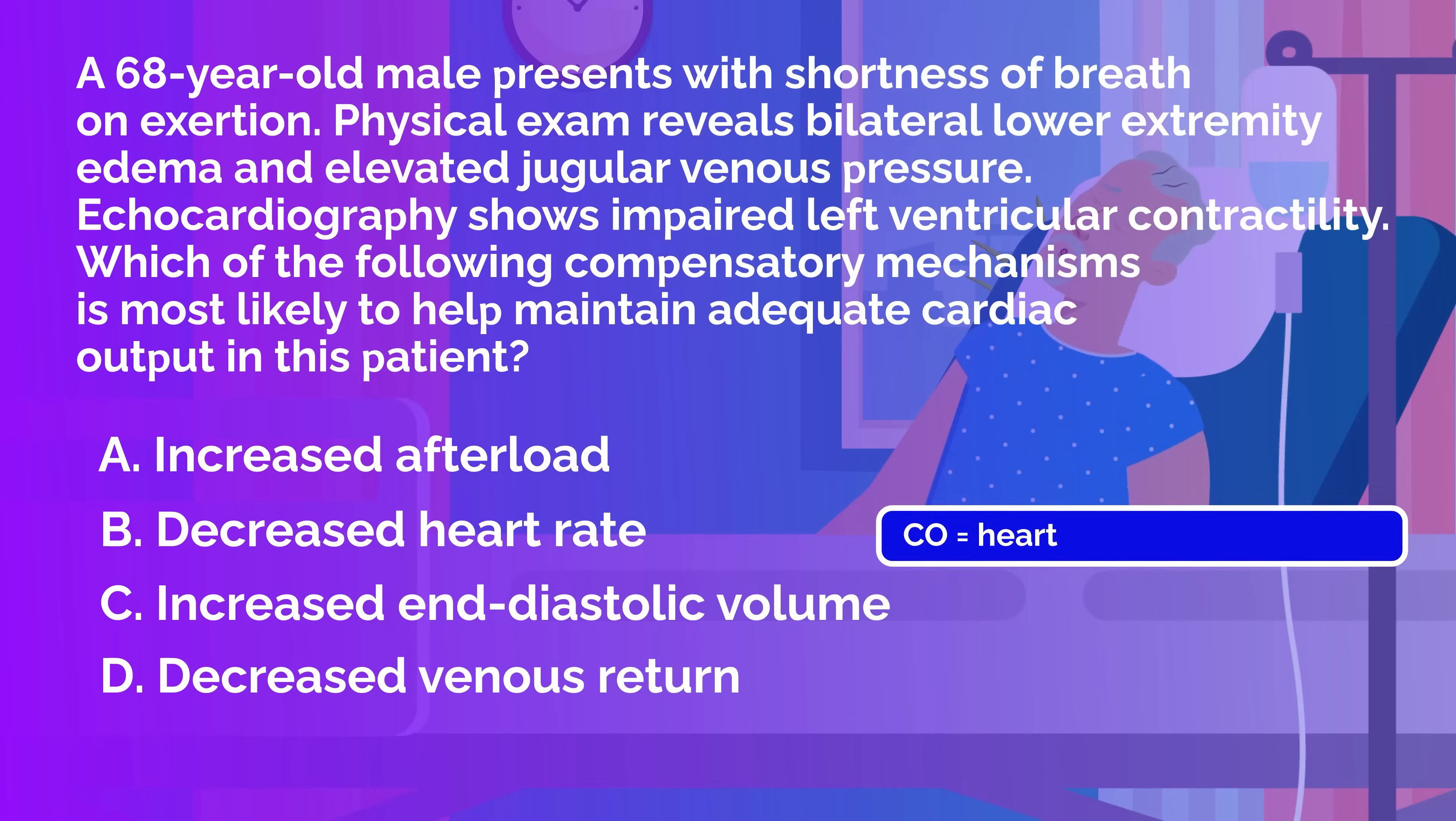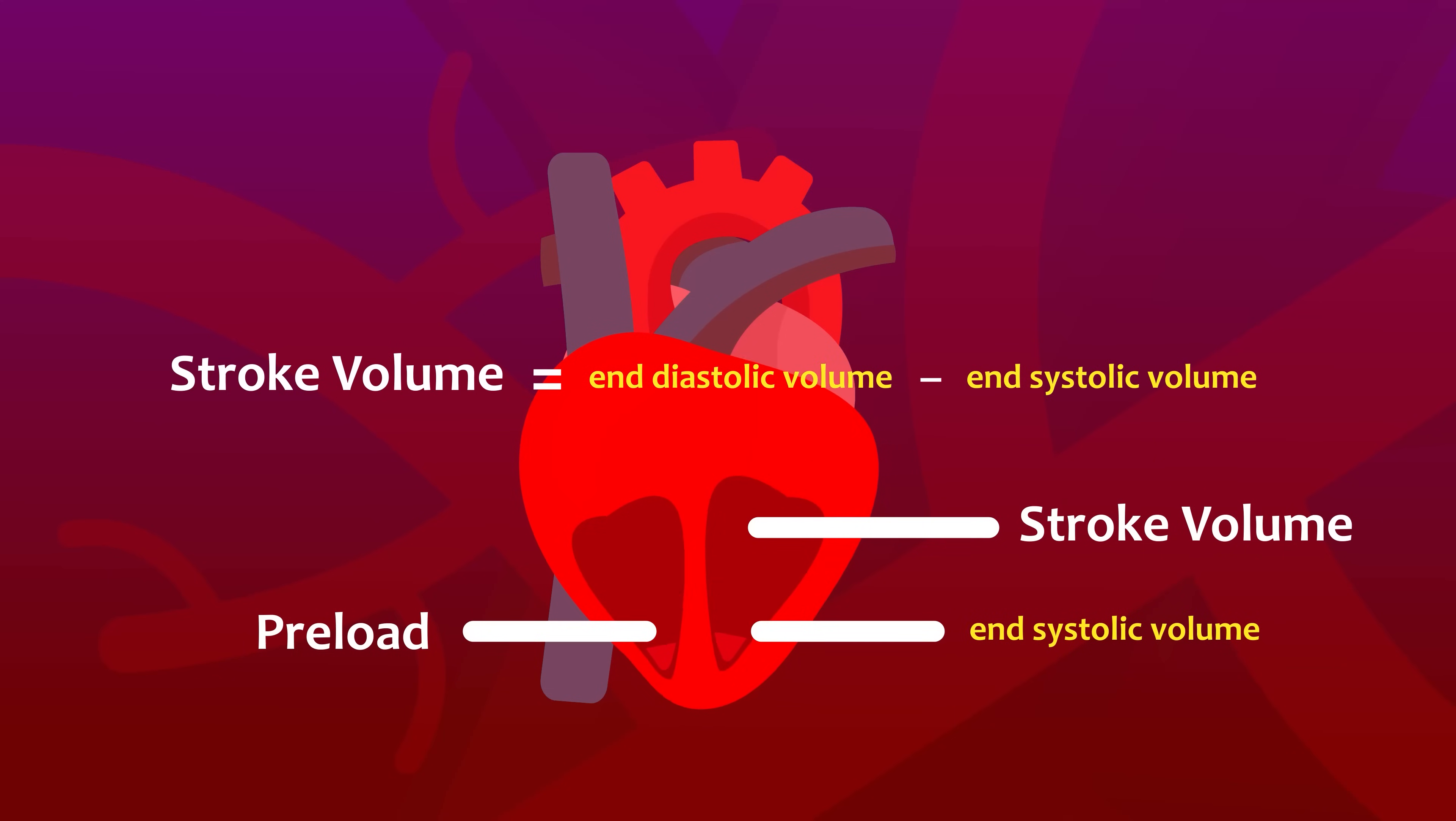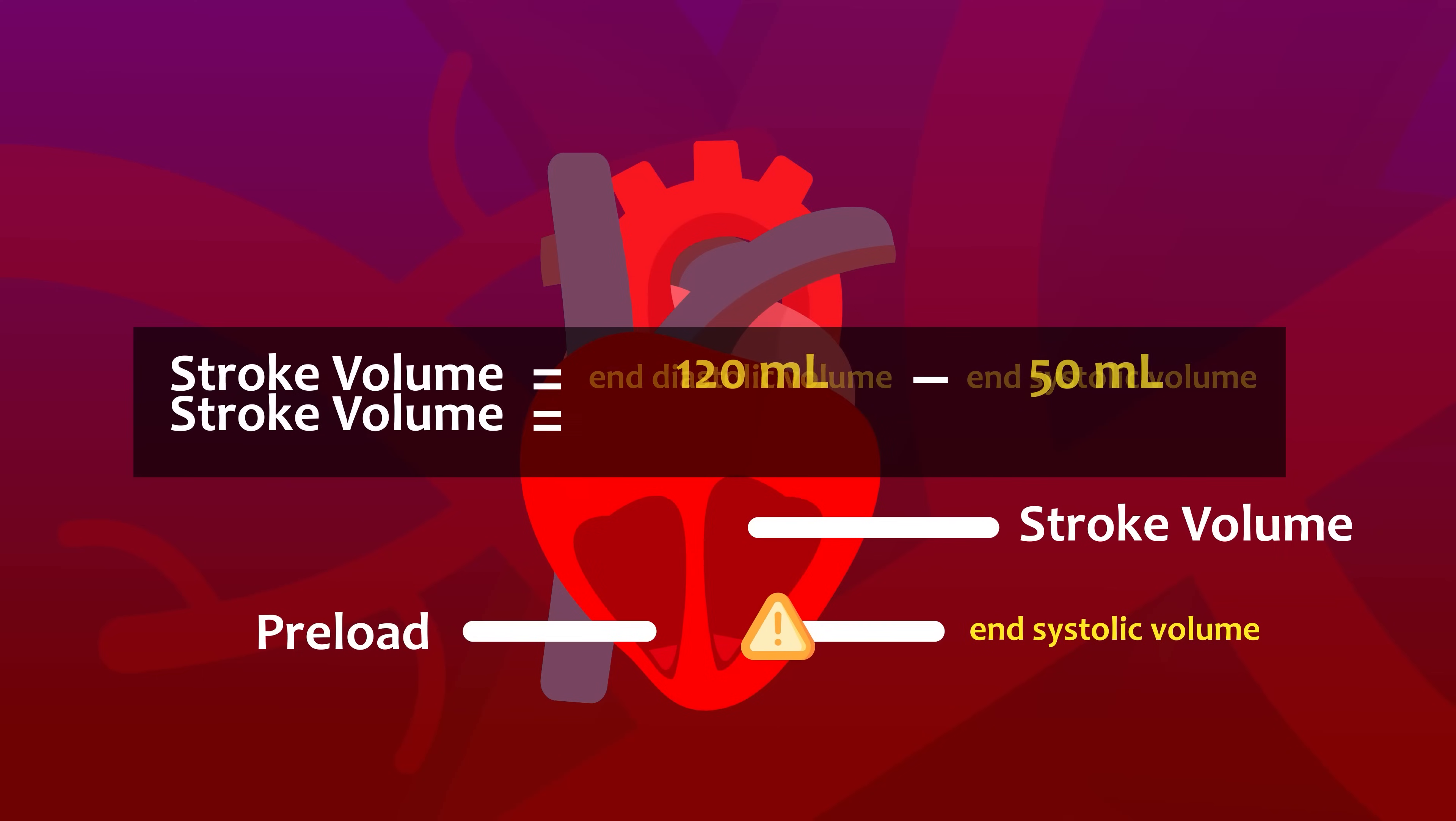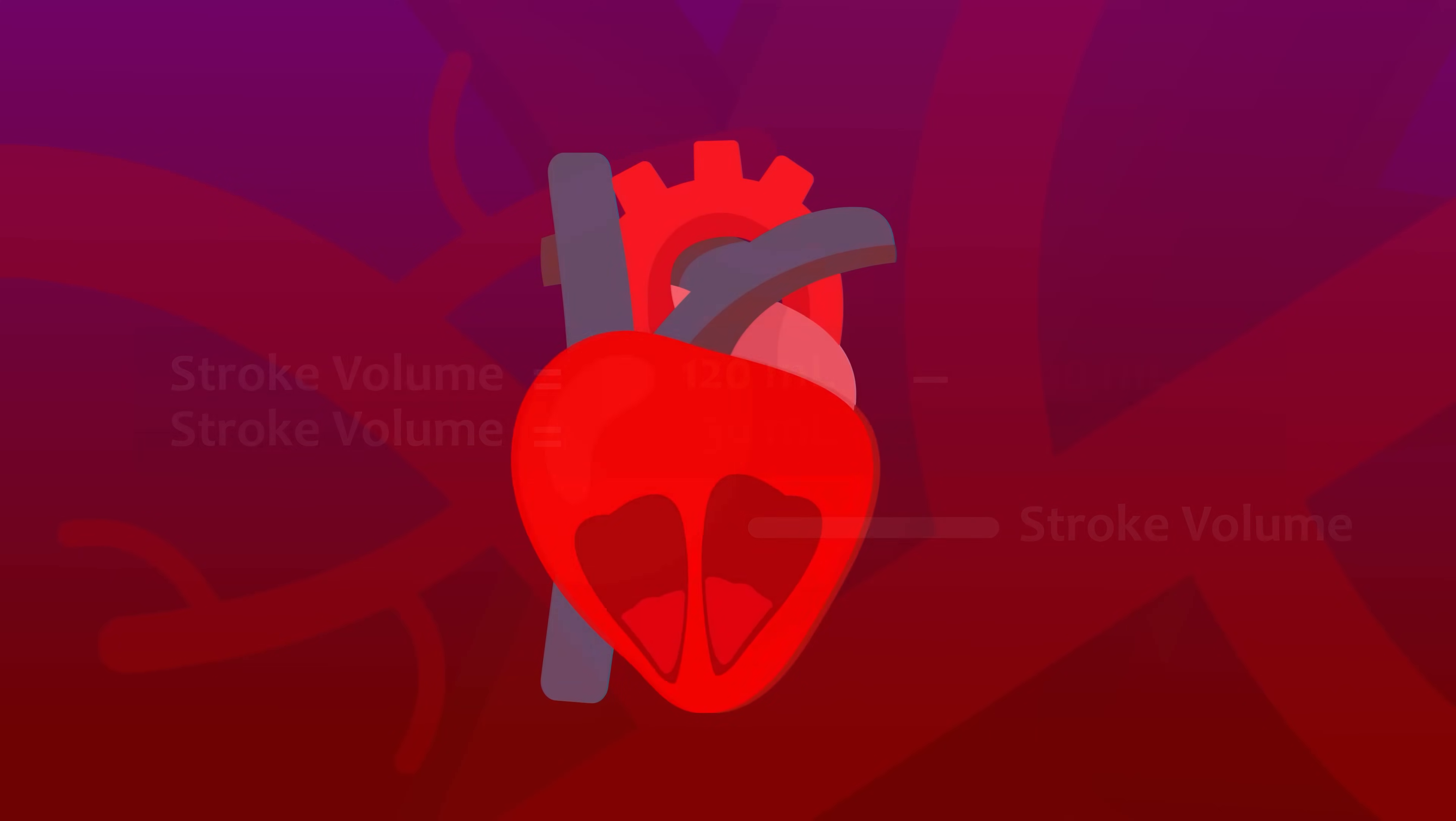A student who only memorized that cardiac output equals heart rate times stroke volume may be drawn to and tripped up by the keyword heart rate in answer choice B. But a student who understands the physiologic meaning of stroke volume and how it's determined can apply deeper reasoning. Stroke volume is end diastolic volume minus end systolic volume. With impaired left ventricular contractility, you'll get increased end systolic volume, which means reduced stroke volume. Therefore, cardiac output will drop unless some compensatory mechanism kicks in.